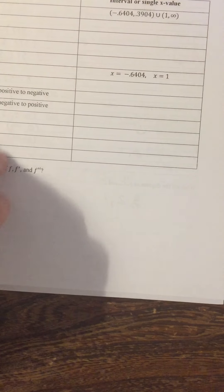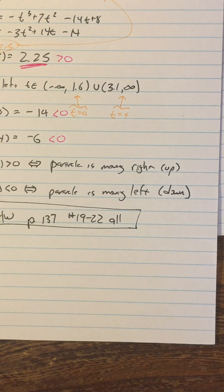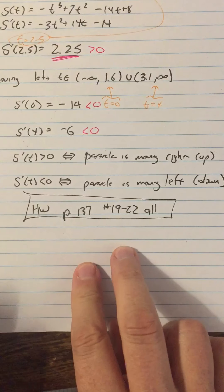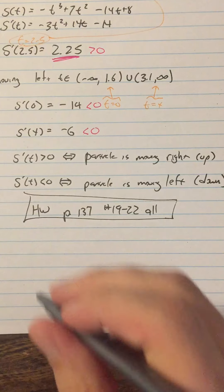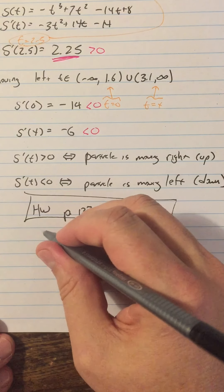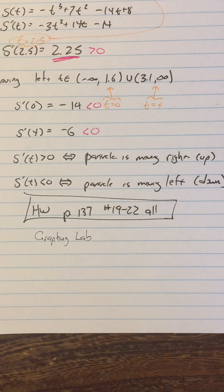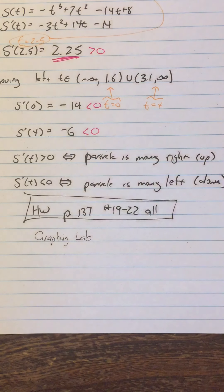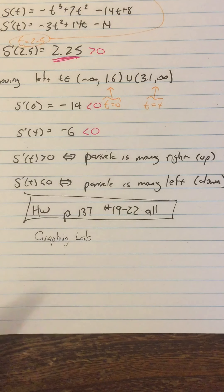So let's see if I can summarize what the homework for today is. We had page 137, number 19 through 22, all. We had that from the movement lab, and then we have the graphing lab. You have to turn that in.